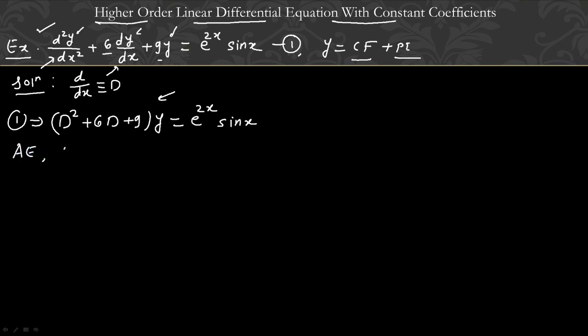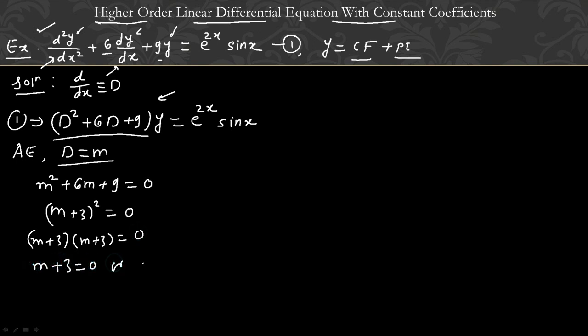Now we can write the auxiliary equation. In the auxiliary equation we replace D with m. So the auxiliary equation is m squared plus 6m plus 9 equals 0. This becomes (m+3) squared equals 0, which gives (m+3)(m+3) equals 0. So m plus 3 equals 0 or m plus 3 equals 0. Therefore m equals minus 3 or minus 3. The roots are real but equal.